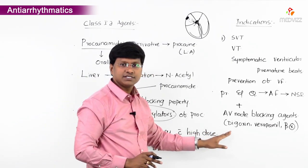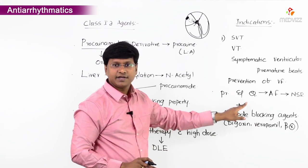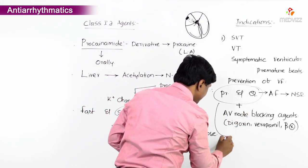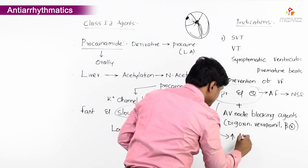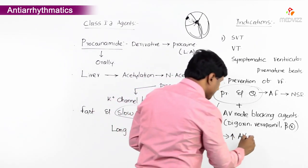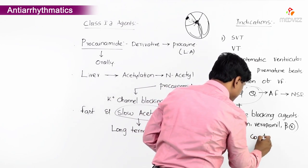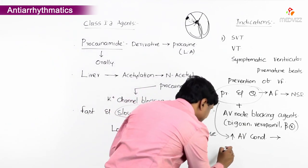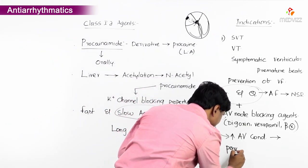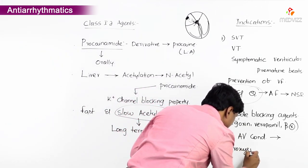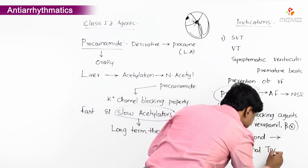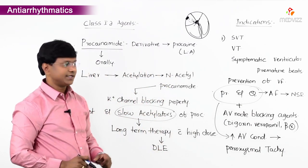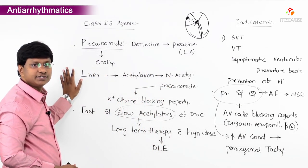Procainamide and quinidine increase AV nodal conductivity resulting in paroxysmal tachycardia. This is about class 1a agents.